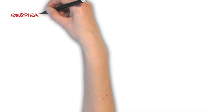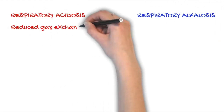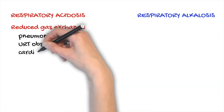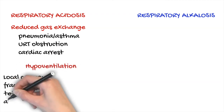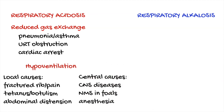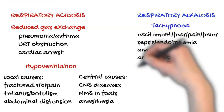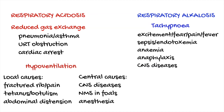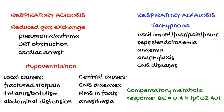Now let's see respiratory alterations. Respiratory acidosis is basically caused either by reduced gas exchange or by hypoventilation, which can have local or central causes — all of these mechanisms cause an increase of pCO2. Alkalosis is due to tachypnea, causing a decrease of pCO2, and can be due to various mechanisms. Both in cases of respiratory acidosis and alkalosis, this formula can help you calculate the alteration of base excess as a compensatory metabolic response.